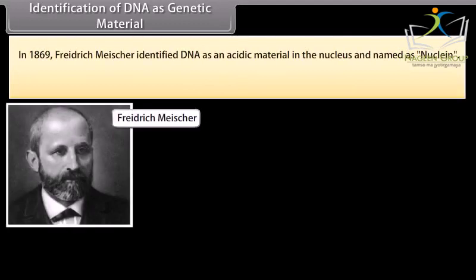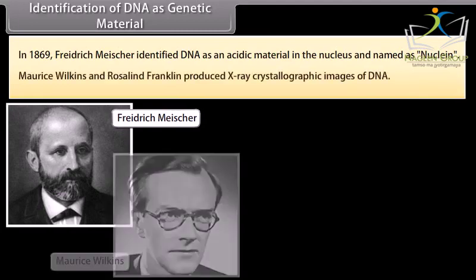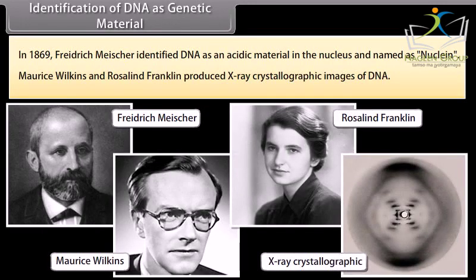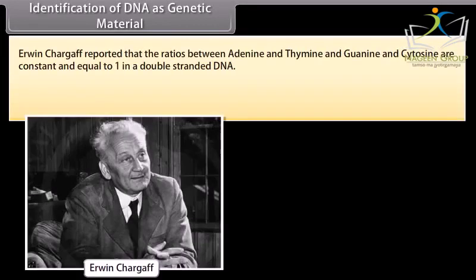Identification of DNA as genetic material. In 1869, Frederick Meischer identified DNA as an acidic material in the nucleus and named it nuclein. Morris Wilkins and Rosalind Franklin produced X-ray crystallographic images of DNA. Irwin Chargaff reported that the ratio between adenine and thymine, and guanine and cytosine, are constant and equal to 1 in a double-stranded DNA.